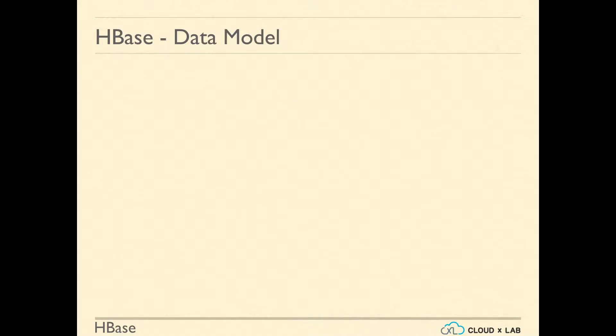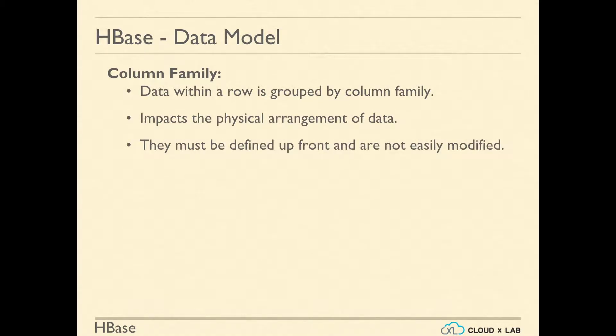Data within a row is grouped by column family. It impacts the physical arrangement of data. The column families must be defined up front and are not easily modifiable. Every row in a table has the same column families, but a row need not store data in all of its column families.